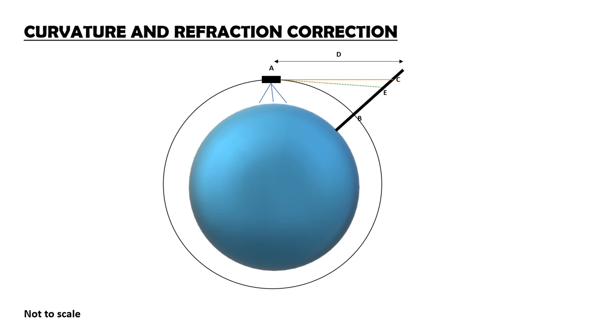Here, BC and CE are corrections due to curvature and refraction respectively, shortly as CC and CR. Let O be the center of the earth and R be its radius.